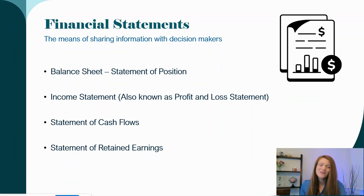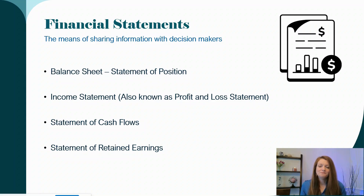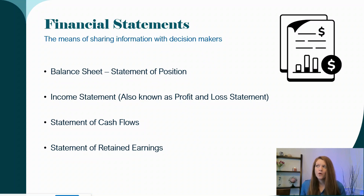The income statement is where we have revenue minus expenses to get to our net income — that's the short version. This tells us what our profit is. We look at it as a statement of activity over a period of time, maybe January 1st to December 31st, or March 1st to March 31st. In the real world, you'll hear it called a P&L — a profit and loss statement. In academia we call it an income statement, but when I got my first job in corporate accounting, they started talking about the P&L and I was confused. It's the same thing — that's just what it's typically called out in the real world.